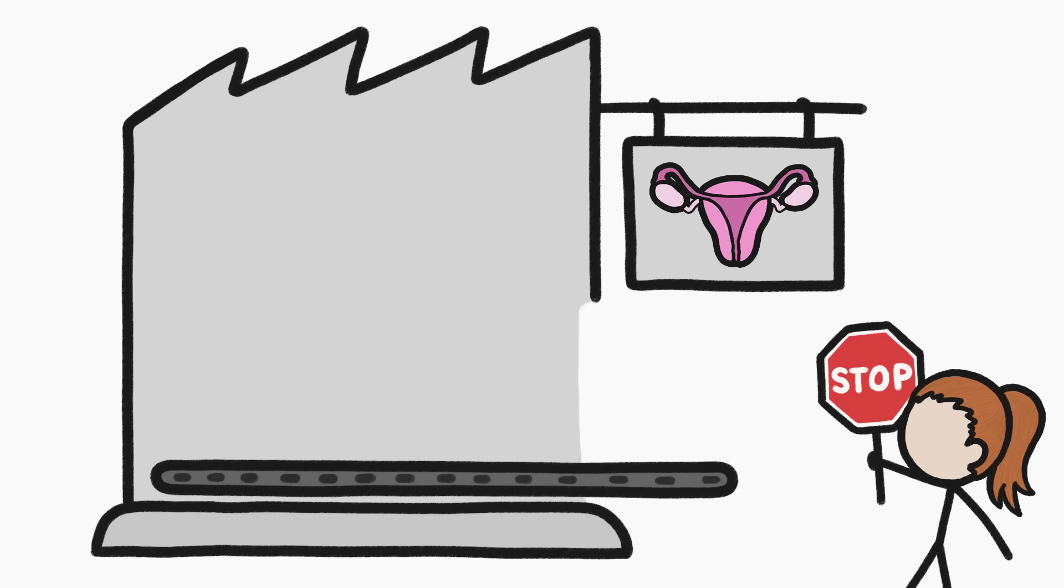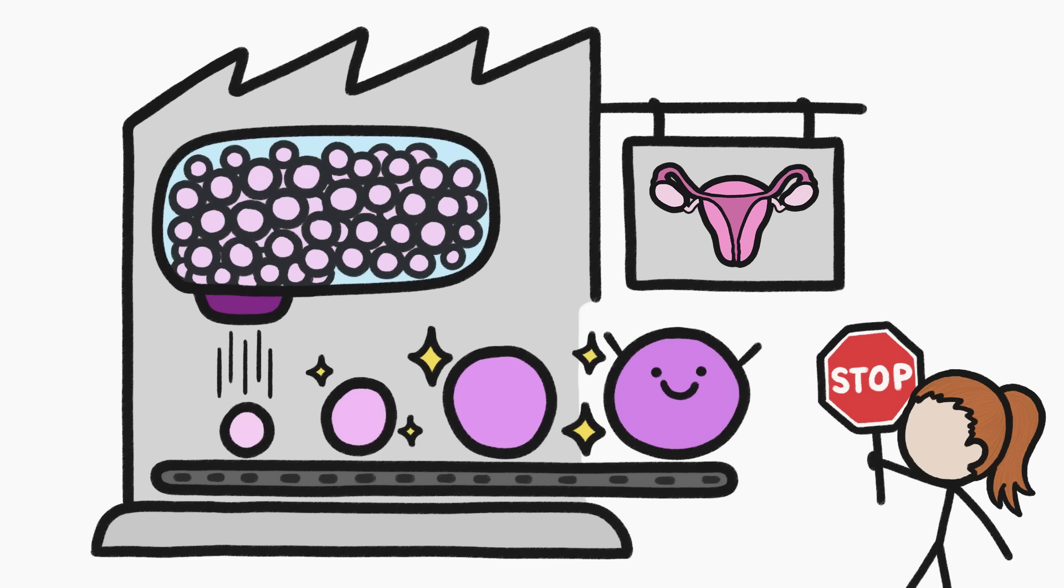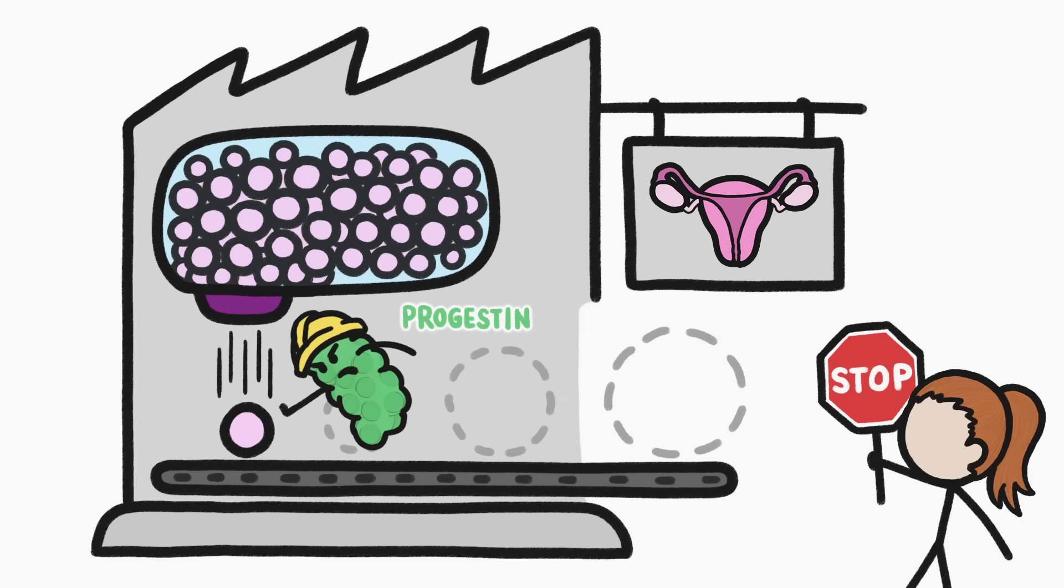One way to interrupt the pregnancy process is to stop production at the egg factory. Even though a person has already made all the eggs they will ever make at birth, the eggs need to finish maturing in order to get released. Certain hormones can block this final step of development and the release of the eggs.